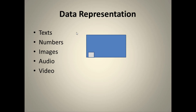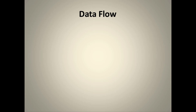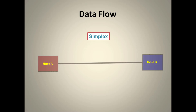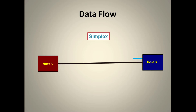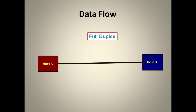Data flow can be simplex, half duplex, or full duplex. In simplex, data flows only from host A to host B — one-way only, like a CPU to a monitor. In half duplex, both hosts can send and receive, but not simultaneously — when one is sending, the other can only receive. In full duplex, both hosts can send and receive at the same time.